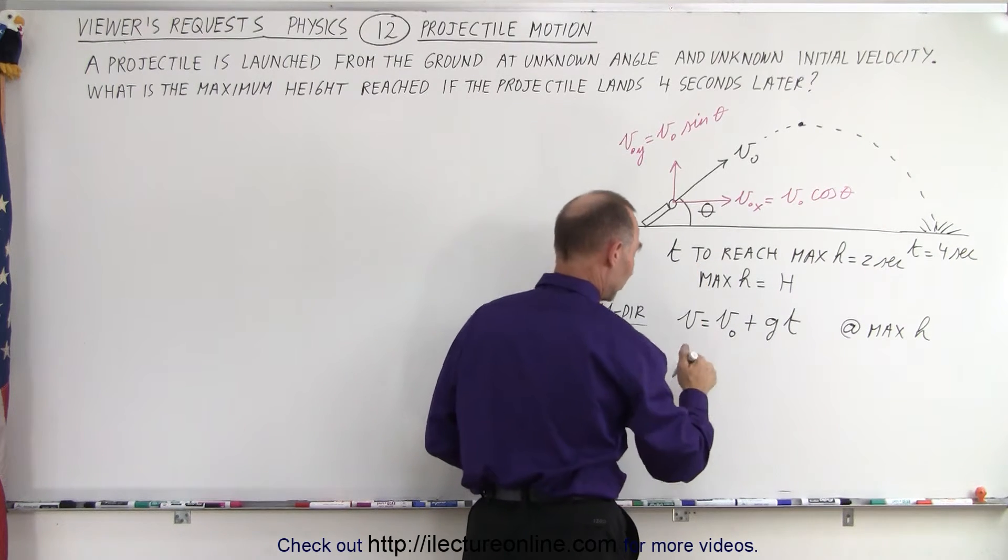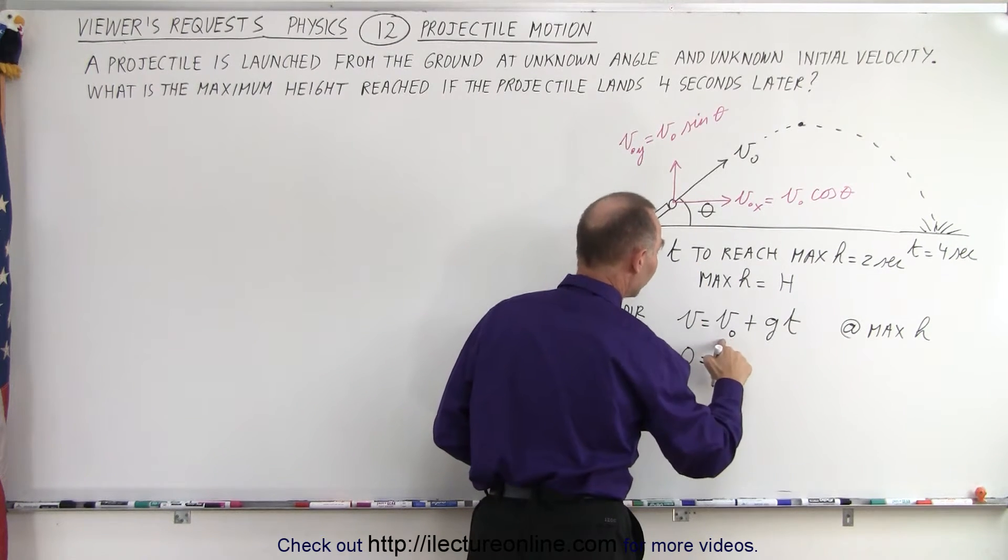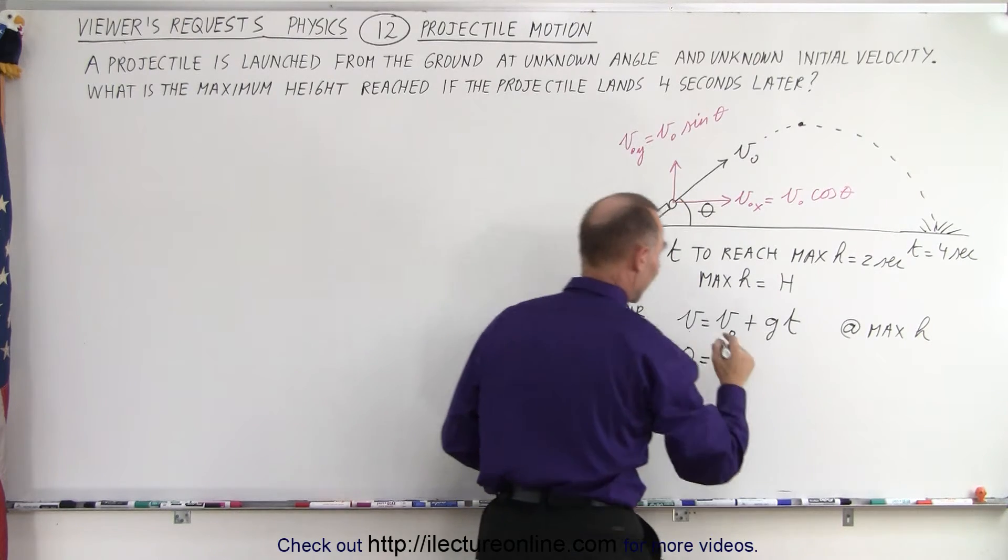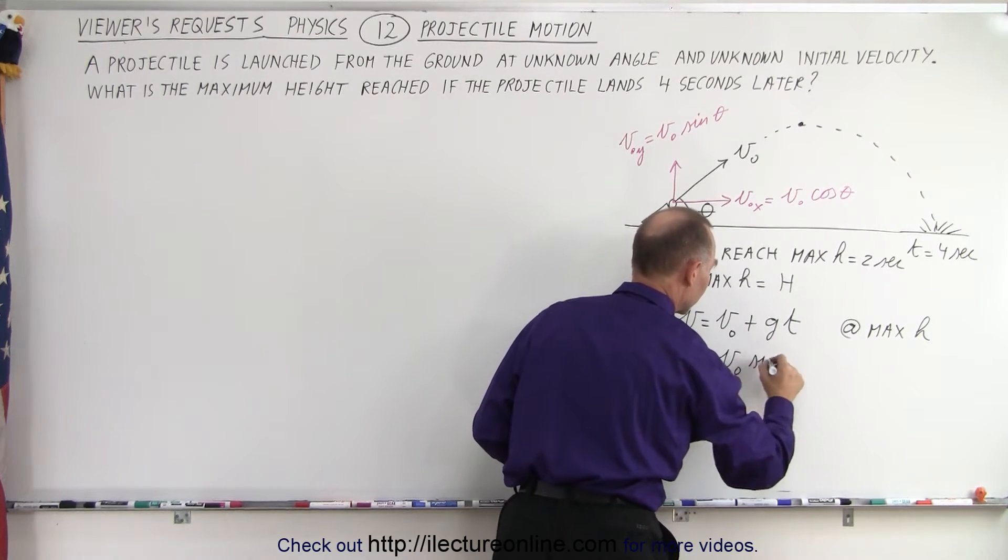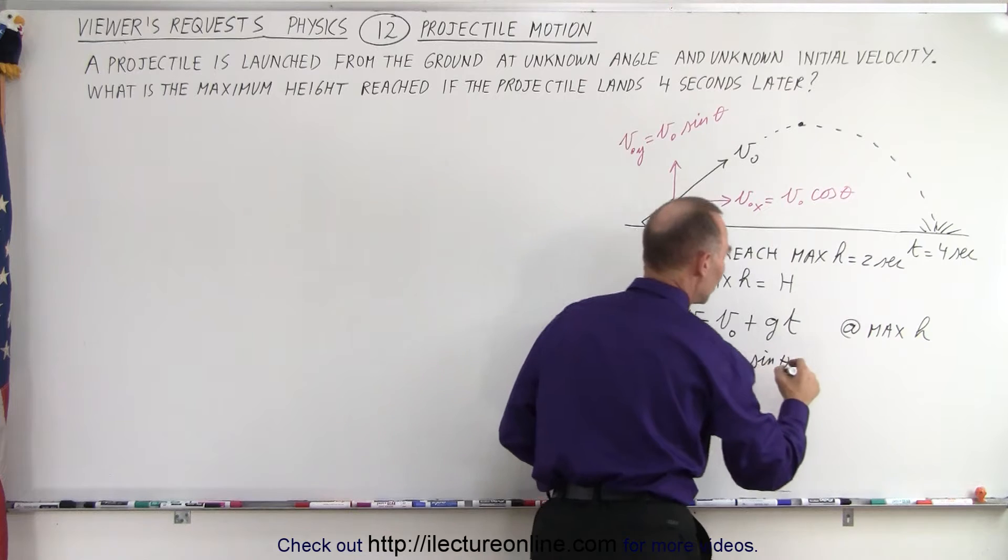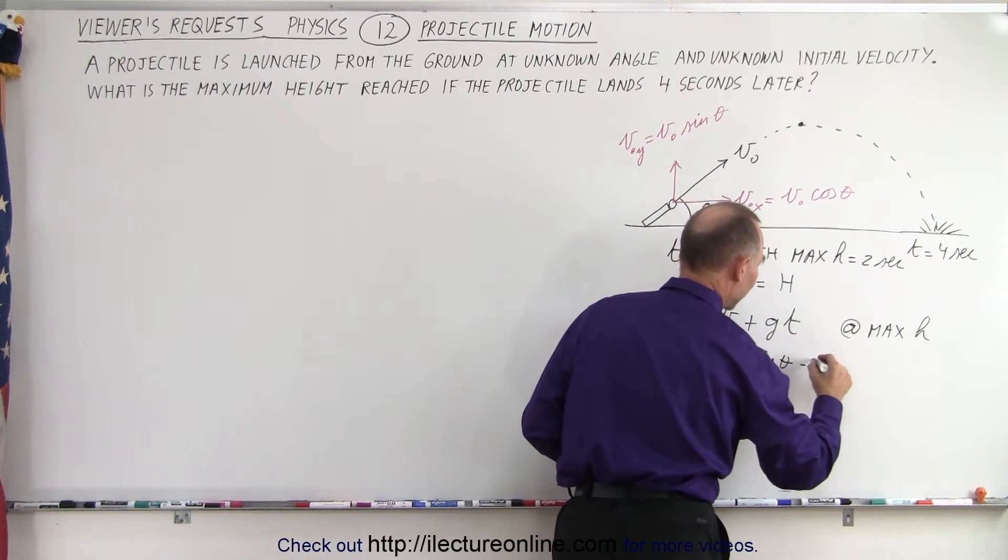So when we reach the maximum height, v will be zero in the y direction. So zero equals the initial v in the y direction, which is v initial times sine of theta, plus gt. But g is negative, so minus 9.8 times the time.